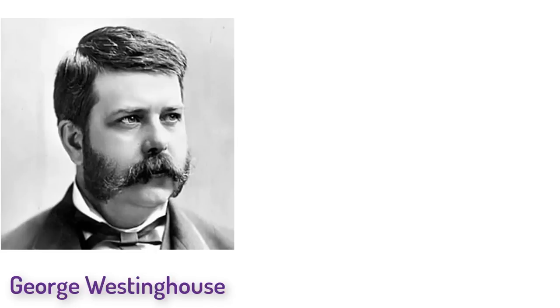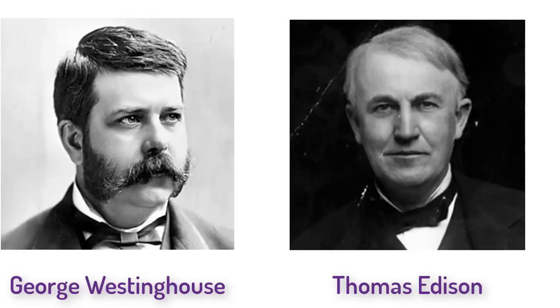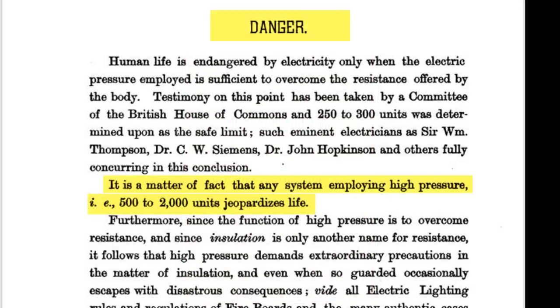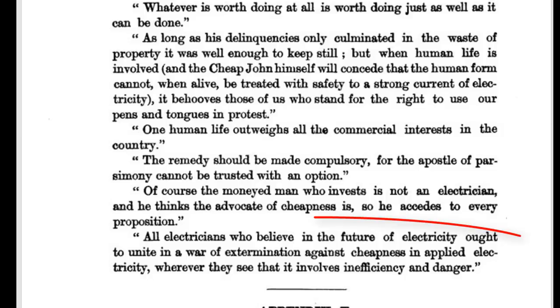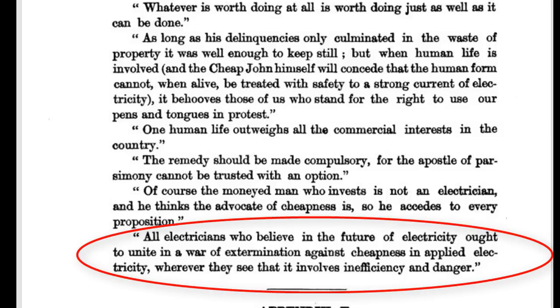Westinghouse was ecstatic. Edison was not. Edison's people begged him to move to AC, but he refused — he felt the dangers of AC would turn people off electricity altogether. He wrote his friend a private note: "Just as certain as death, Westinghouse will kill a customer within six months." The next year, Edison published an 84-page warning stating that any system employing high pressure, i.e. 500 to 2,000 volts, jeopardizes life. He railed that the Westinghouse system was cheap but deadly and that they ought to, quote, "unite in a war of extermination against cheapness that involves inefficiency and danger."